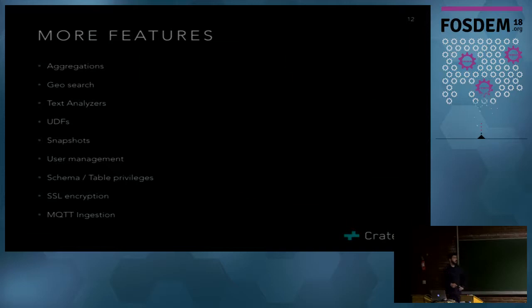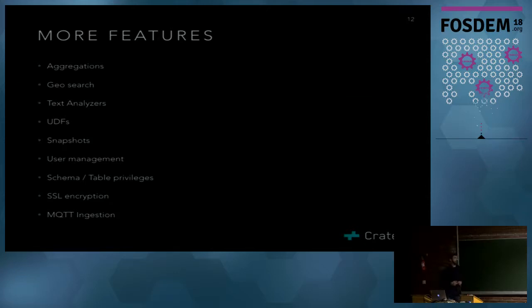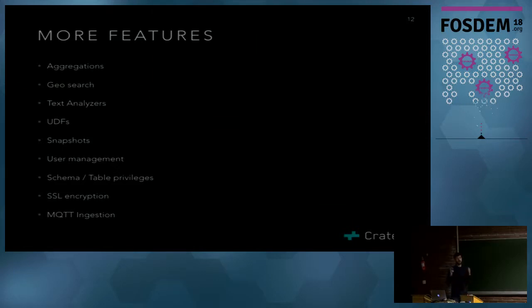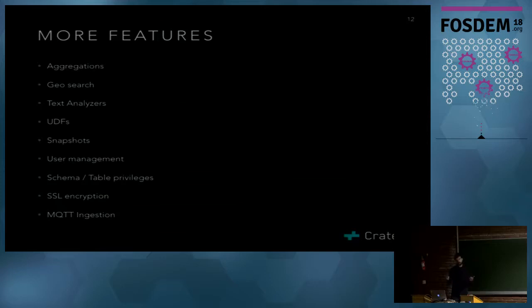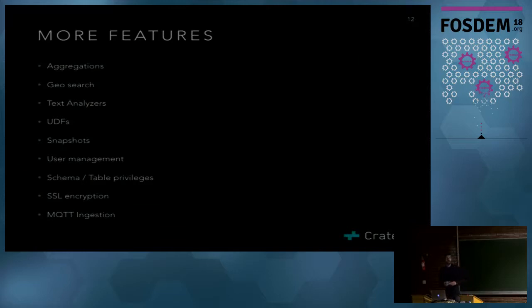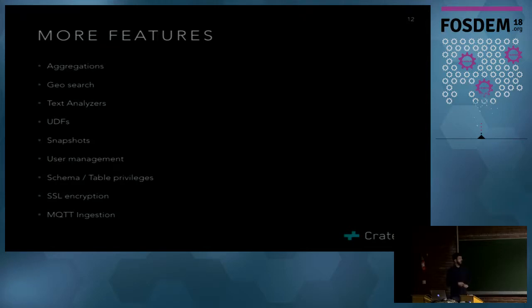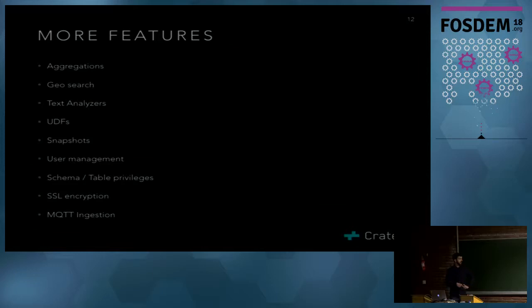There's more: all kinds of aggregations, geosearch with a geo data type so you can search by distance or use geometric methods. There are text analyzers — columns are indexed by default in CrateDB, but for more sophisticated full text search or stemming you can use one of the built-in analyzers or write your own. We also have user-defined functions, snapshots for backup and restore, user management, schema privileges, encryption, and MQTT support.